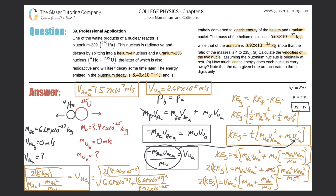Now we move on to letter B: how much kinetic energy does each nucleus carry away? Since we've found the velocities of each, we can find their respective kinetic energies. The kinetic energy of helium equals one half times the mass of helium, multiplied by the velocity of helium squared. Plugging in: 0.5 times 6.68 times 10 to the minus 27, multiplied by 1.57 times 10 to the seventh squared. We get a value of 8.23 times 10 to the minus 13 joules. That's the kinetic energy of helium.